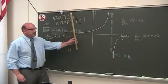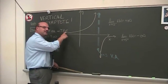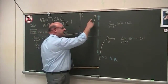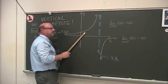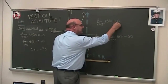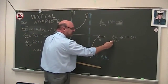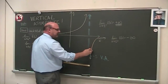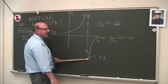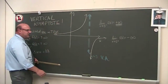So going to the graph, the possible VA was at x equals 5. We check the limit as x approached 5 from the left — the result was positive infinity. So that satisfies the definition, but for graphing purposes we also check the limit as x approaches 5 from the right. Negative infinity. So we have, by definition, a vertical asymptote.